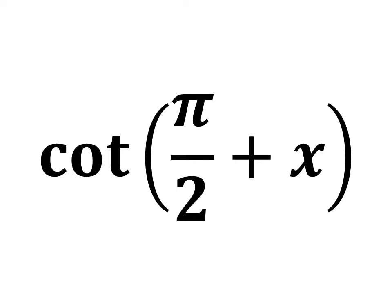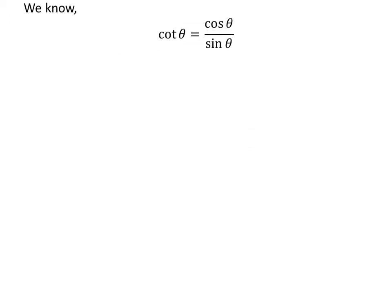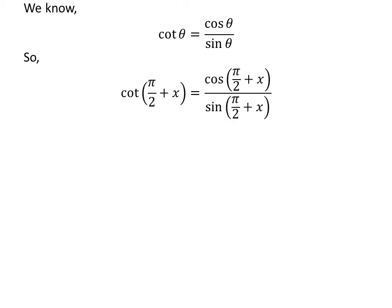In this video, we will learn to find the value of cotangent of half of pi plus x. We know cotangent of theta is equal to cosine of theta upon sine of theta. So application of the above identity gives us cotangent of half of pi plus x is equal to cosine of half of pi plus x upon sine of half of pi plus x.